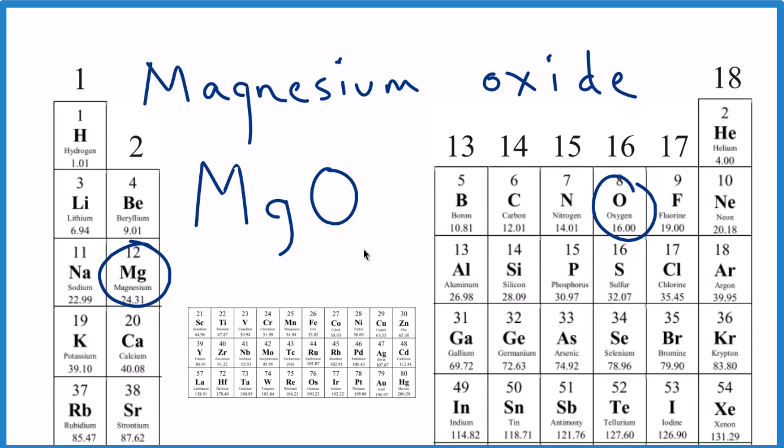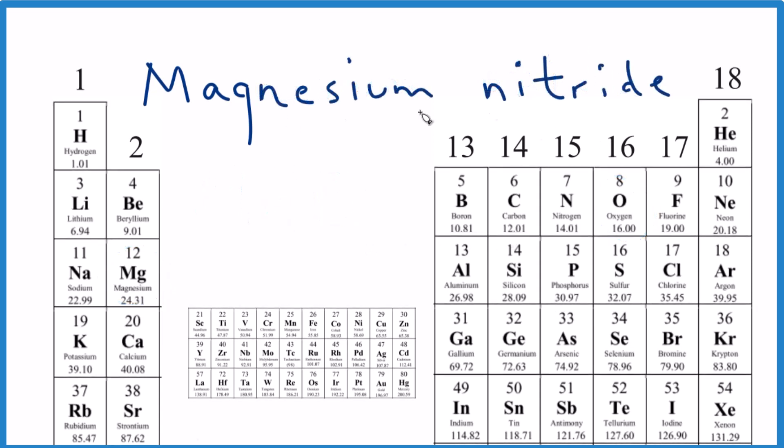Let's try one that's a little bit more complicated: magnesium nitride. Here's our magnesium, here's nitrogen. So we can write Mg and N, just like before. And we can put the charges in. Magnesium is two plus, and nitrogen—we go zero, one minus, two minus—so nitrogen is three minus. Now we need to make these balanced because it's an ionic compound.